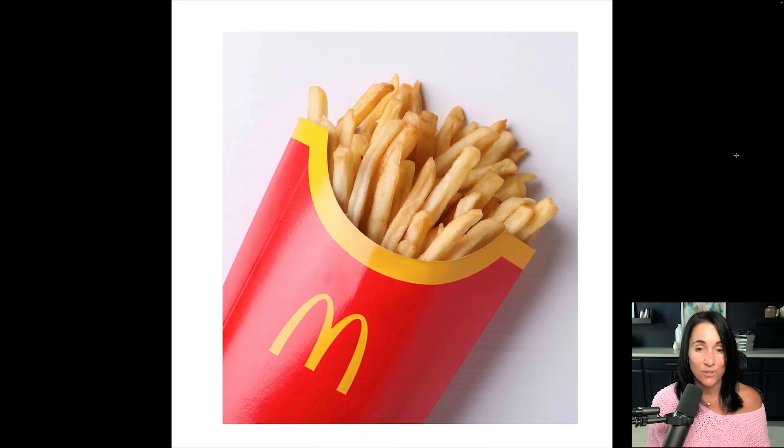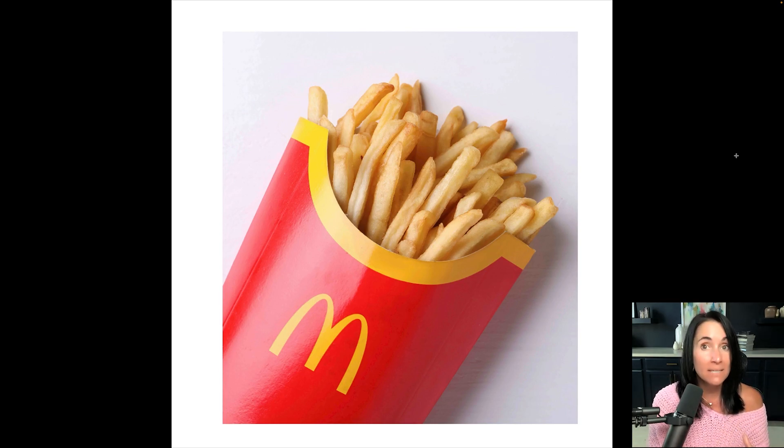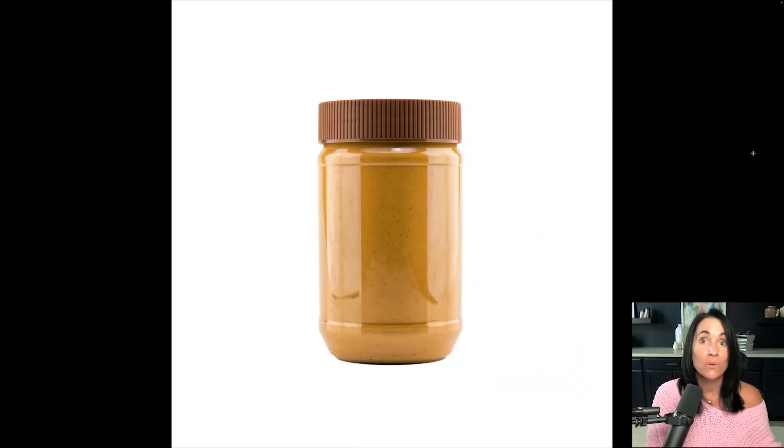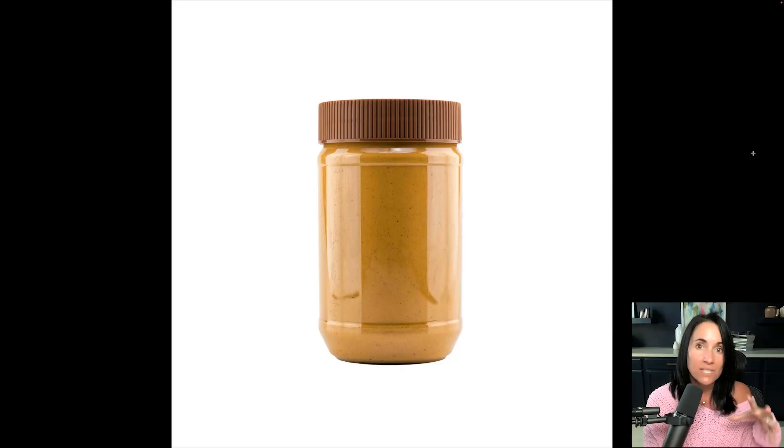The same thing might happen when we see the McDonald's logo. We know that M on that fry container means McDonald's, and when we're little, we might say McDonald's when we see the big M driving in the car. We still don't know it's an M that makes an M sound, or that there's a C, a D, and all of that. We just know that the M and those colors tell us that's McDonald's. Same with a peanut butter jar — we know it's peanut butter, but we don't know all the letters that spell it out. This is environmental print, and it's the start of the alphabetic principle.